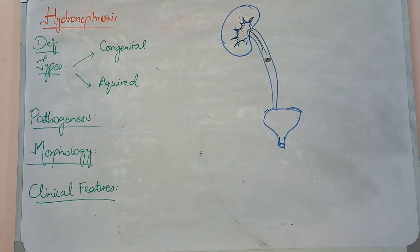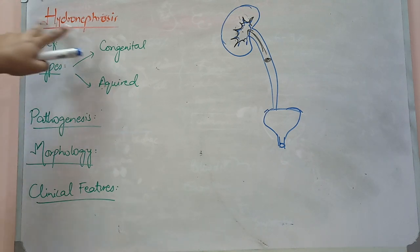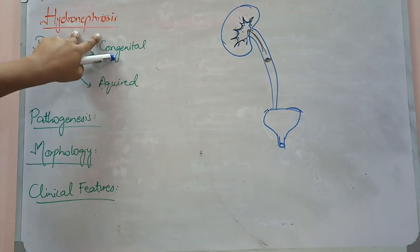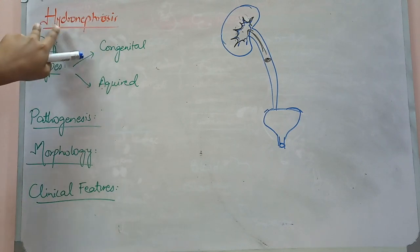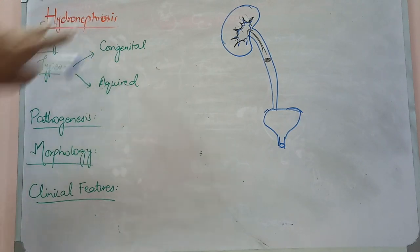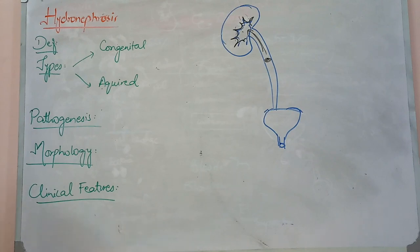Assalamu alaikum everyone. Now we are going to talk about renal pathology, which is hydronephrosis. Hydronephrosis is a condition in the kidney where there is fluid accumulation or a water-type condition that develops.